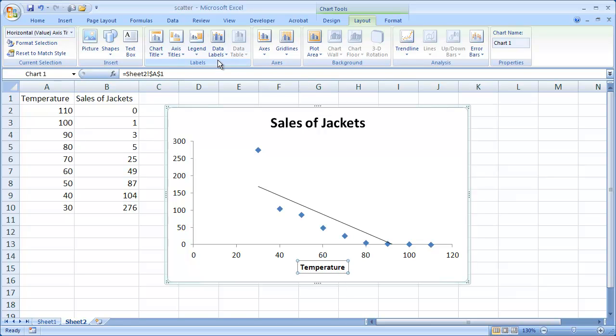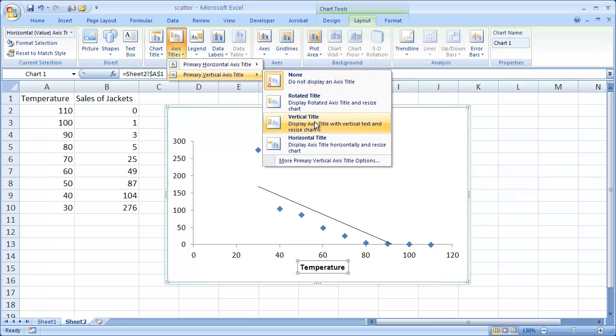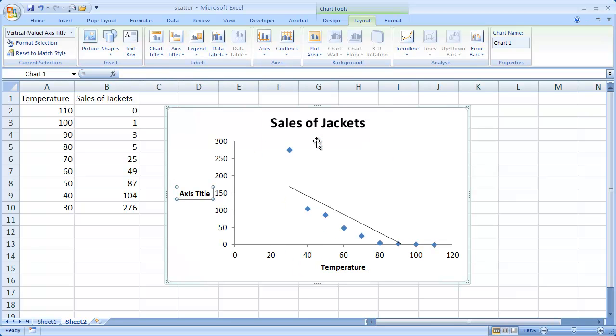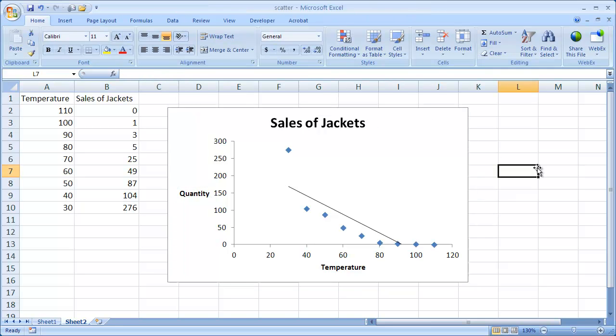And let's add also the label for the vertical axis. And let's have it a horizontal title. And this one, I think we can just click, we can just put in Quantity.